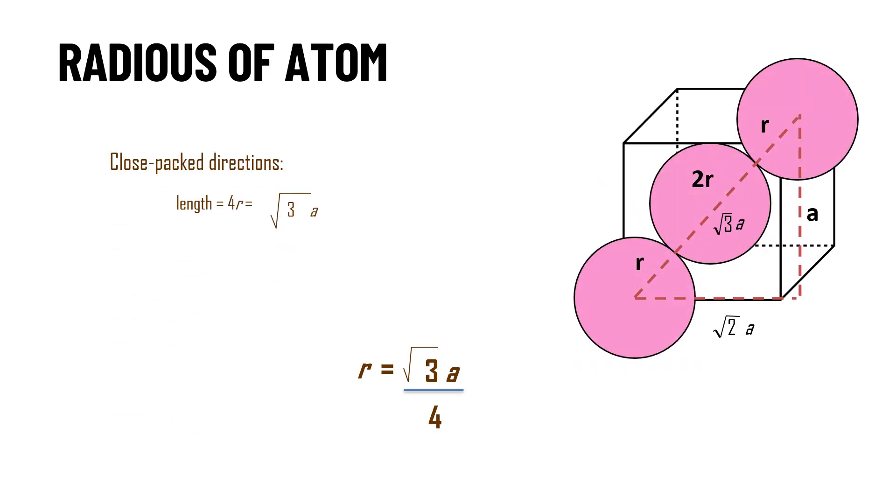Let us see how is the radius of atom. Here you may see one corner atom, another corner atom is selected along with the central atom. And here you can see this body diagonal is nothing but root 3a. Root 3a comes from the 3D Pythagoras theorem.